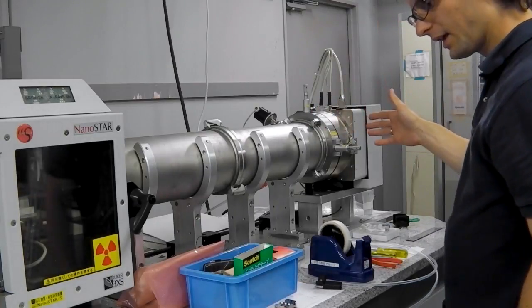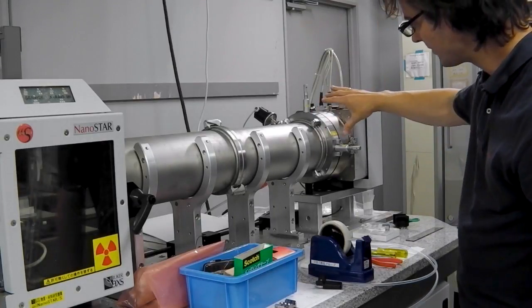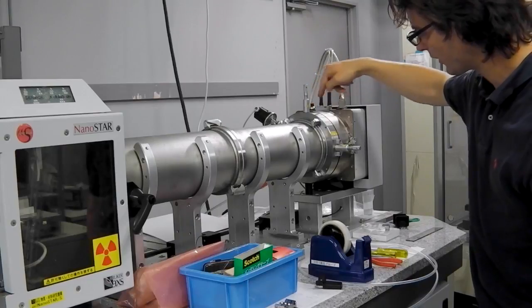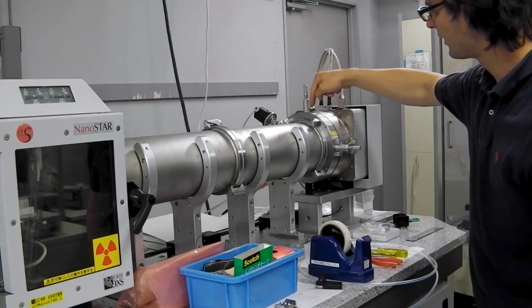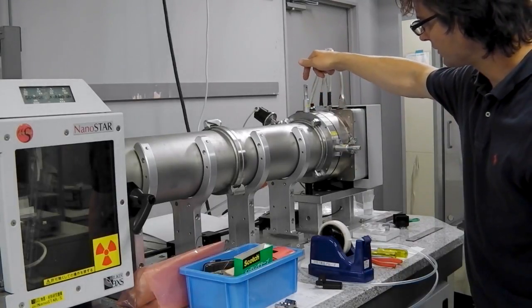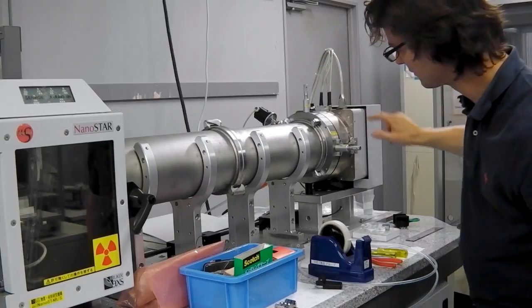At the very end of the flight tube, we have the beam stop. The beam stop sits over here. It's connected with wires and springs, and it can be adjusted, again, with these micrometers over here and here.